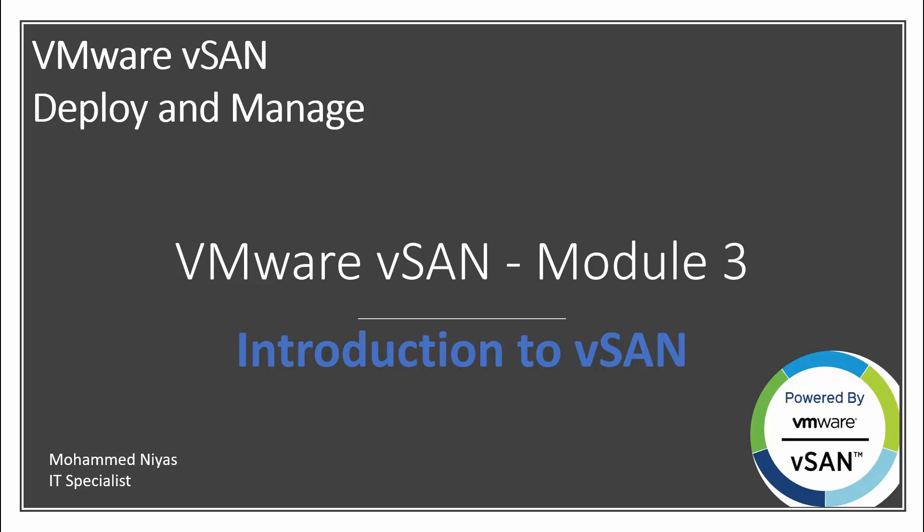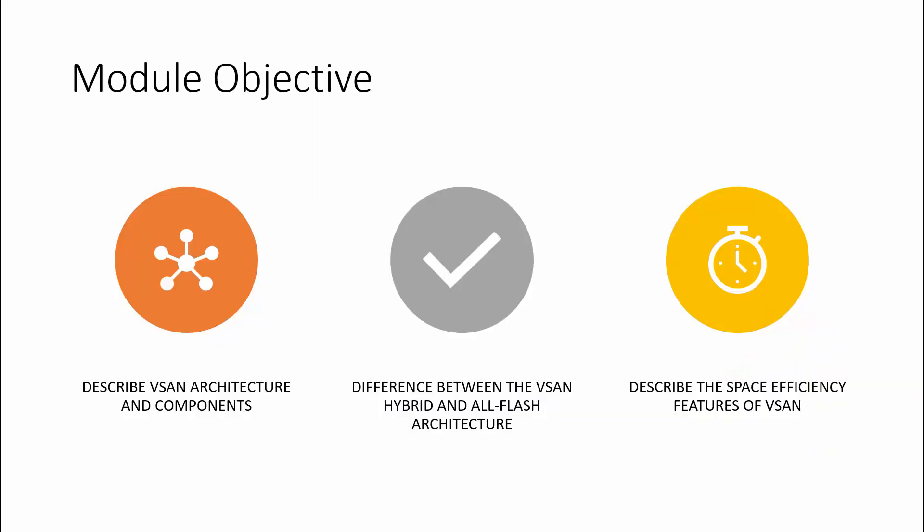In the last video, I gave you a detailed explanation about the traditional architecture of a SAN, and I hope that module provided the minimum information required to start with VMware vSAN. The main objective of this module is to give you an understanding of VMware vSAN, its architecture and components. We will also talk about the different types of architecture — hybrid and all-flash — and the space efficiency features of VMware vSAN.